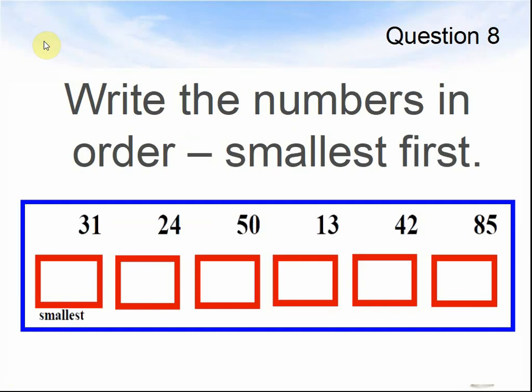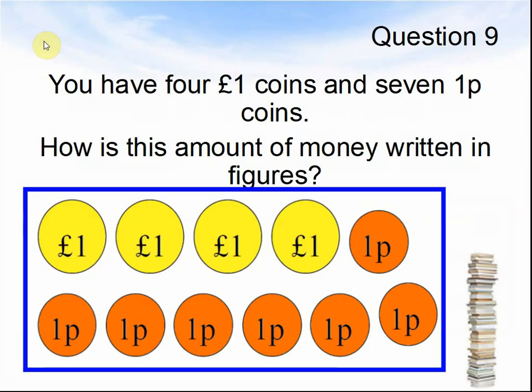Question 8. Write the numbers in order, smallest first. Pause the video until you are ready to answer the next question. Question 9. You have 4 £1 coins and 7 1p coins. How is this amount of money written in figures? Pause the video until you are ready to do the next question.